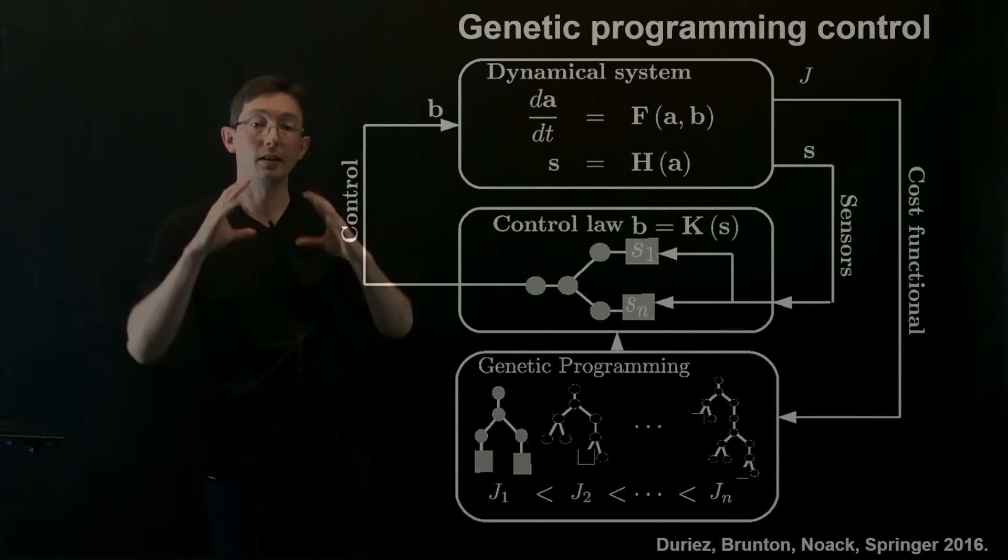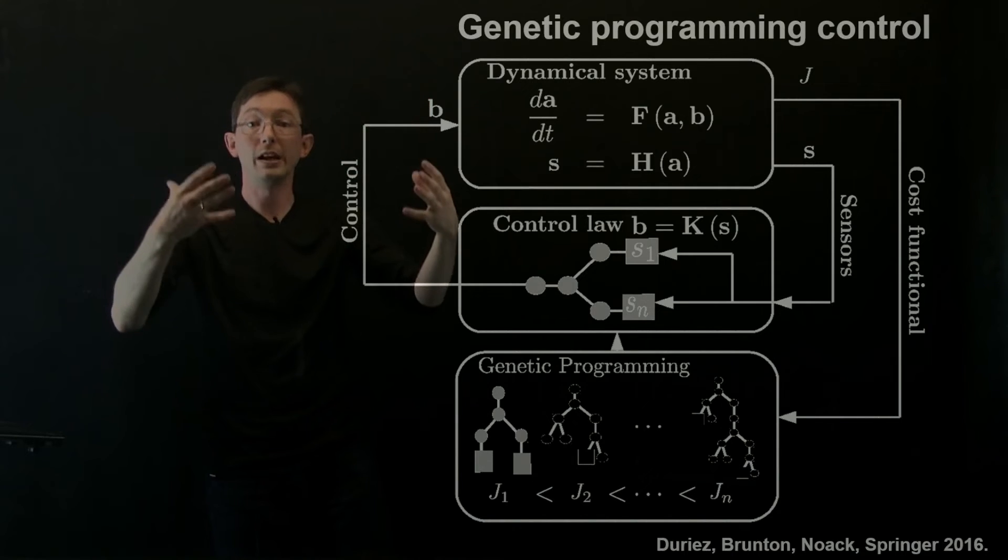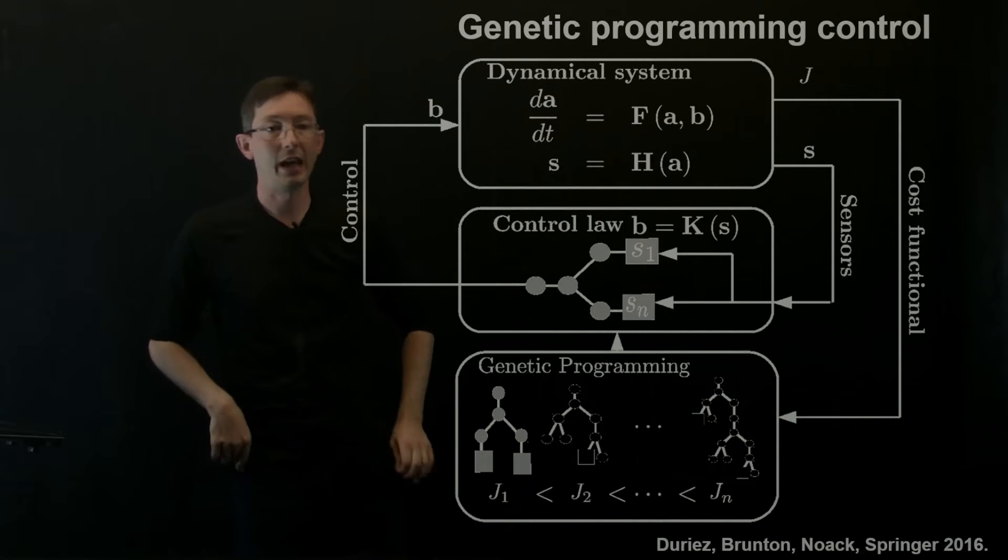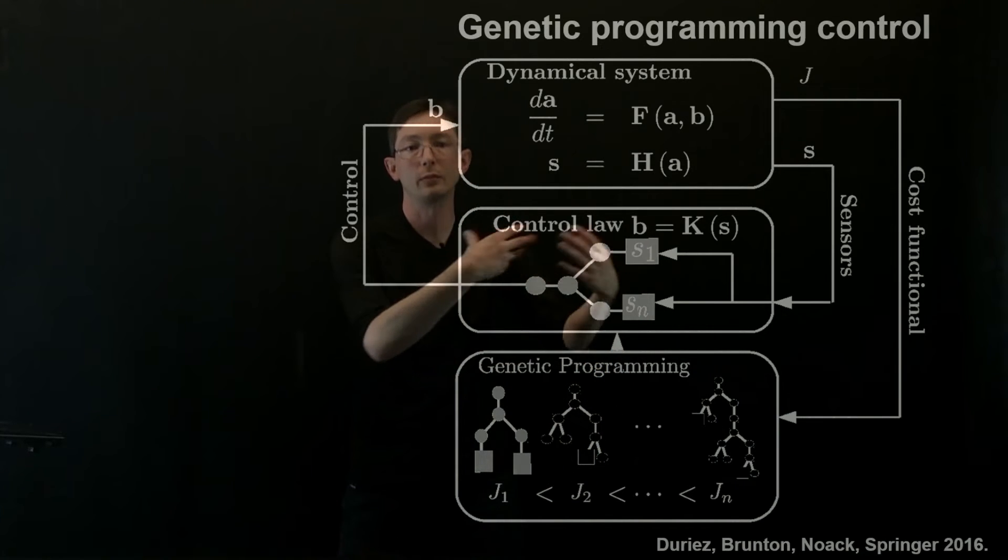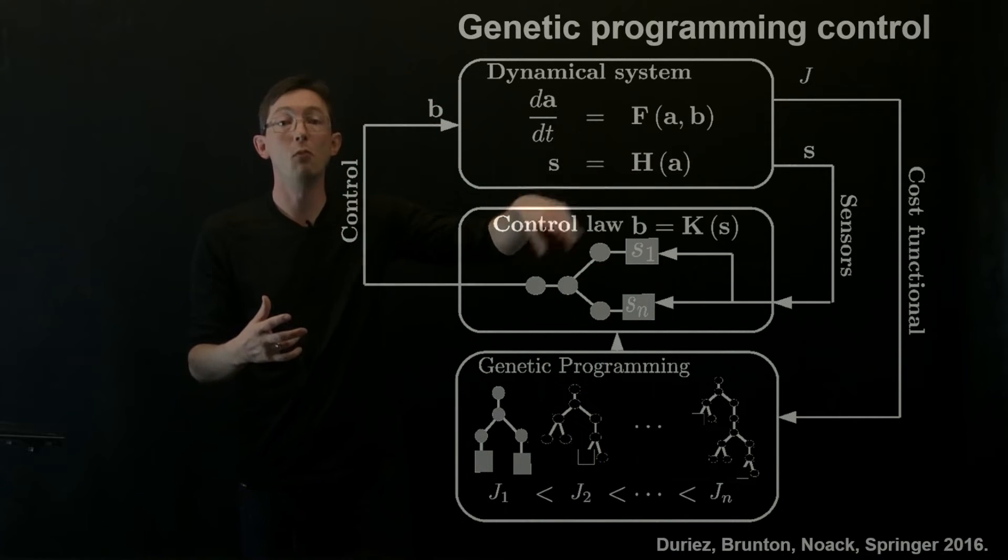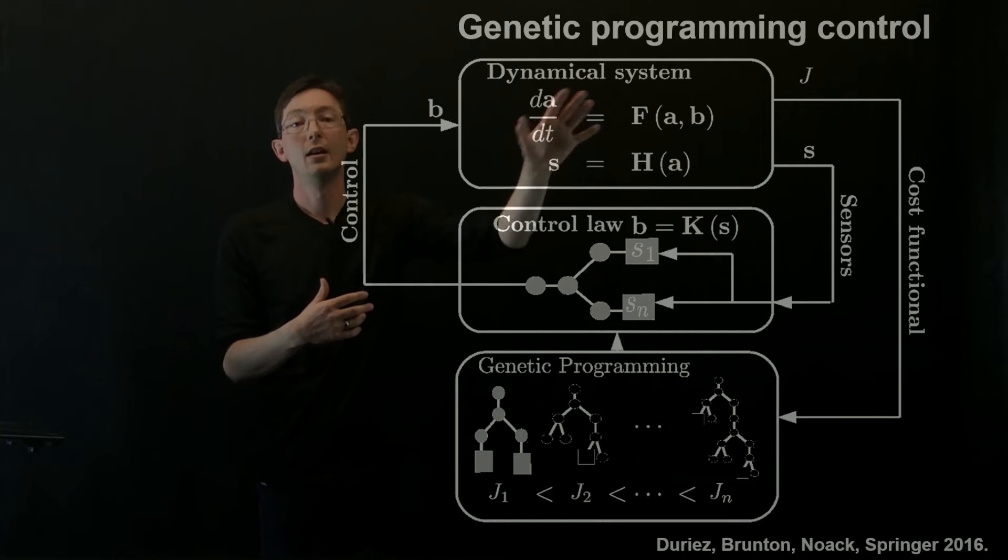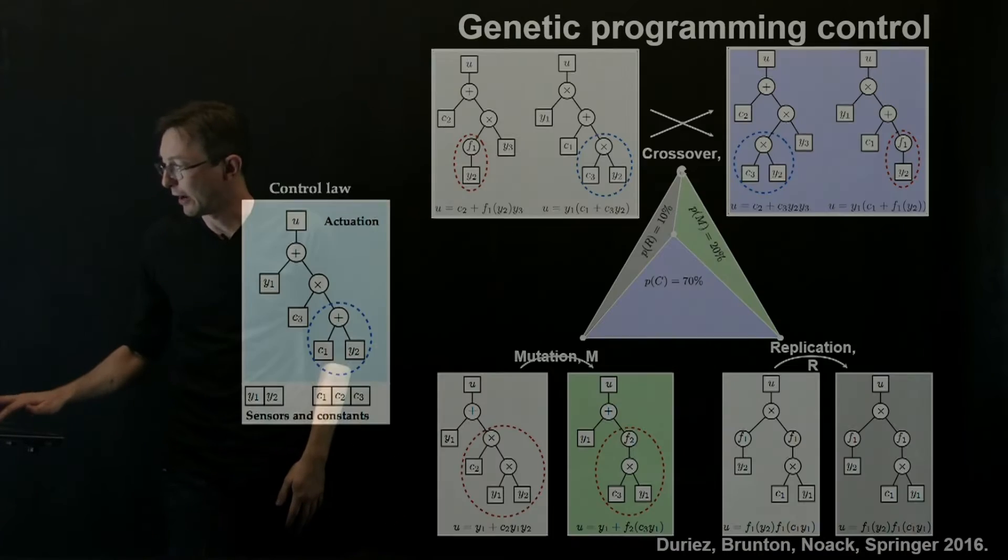And then I use those genetic operations of mutation, crossover and replication to design new generations and iteratively refine this control law until it's more and more effective at controlling this dynamical system.